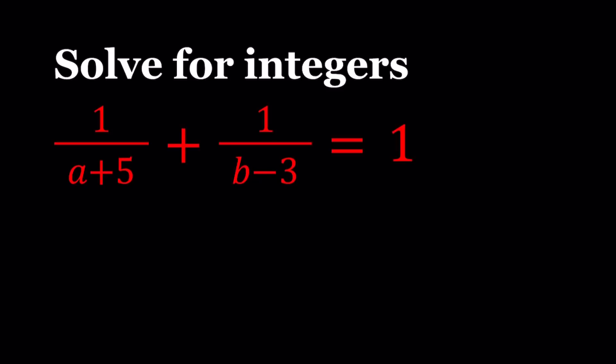Now first of all, notice that in this equation, since a plus 5 and b minus 3 are in the denominators, a cannot be negative 5, and b cannot be 3. So those are the only restrictions we have. Other than that, we're good.